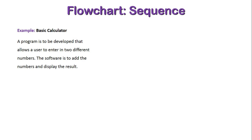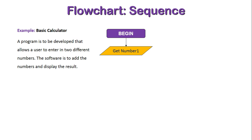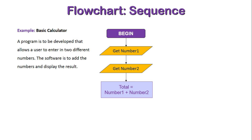Next we'll look at the same scenario, but this time as a flowchart. We start off with a terminator saying begin. From here we get number one and get number two, again using our input/output symbol, which is a parallelogram. We then apply our process of adding number one to number two, and then once again using the input/output parallelogram, display the result to the user, and then that is the end of our program.